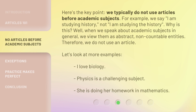Here's the key point: we typically do not use articles before academic subjects. For example, we say 'I am studying history,' not 'I am studying the history.' When we speak about academic subjects in general, we view them as abstract, non-countable entities — therefore we do not use an article. For example: 'I love biology.' 'Physics is a challenging subject.' 'She is doing her homework in mathematics.'